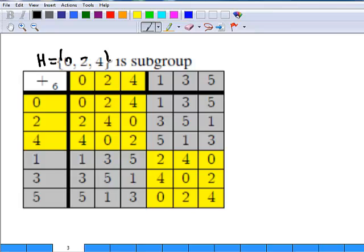Now when you fill out the table, you find that the yellow part, when you add together elements in the yellow part, they stay in the yellow part. For example, 4 plus 4 is 2, right? It's still a yellow number.